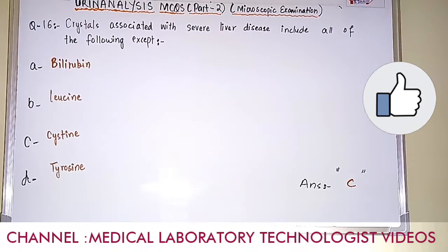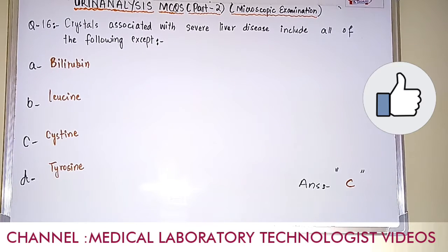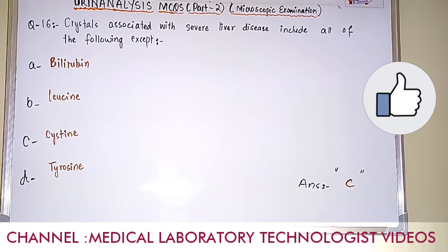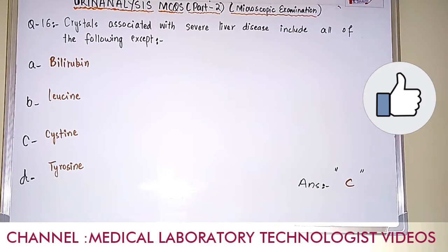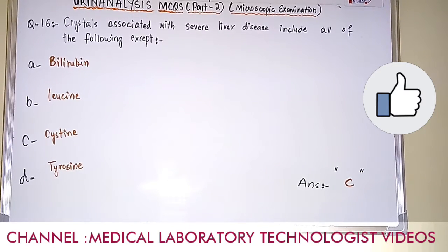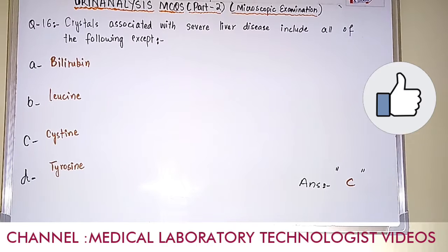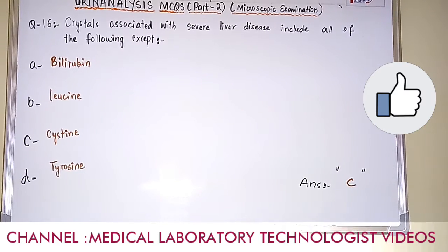Question number 16. Crystals associated with severe liver disease include all of the following except. Option A: bilirubin. Option B: leucine. Option C: cystine. Option D: tyrosine. The answer is option C, cystine. Except cystine crystals, you will find bilirubin, leucine, and tyrosine crystals in severe liver disease. Cystine crystals are not associated with severe liver disease.